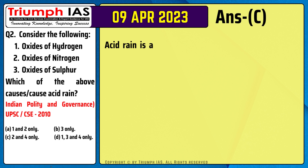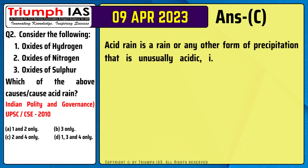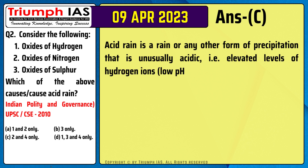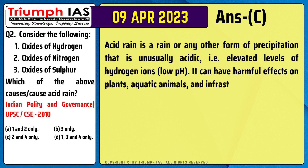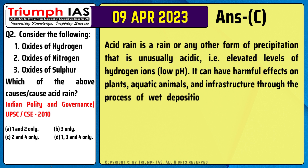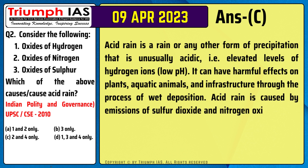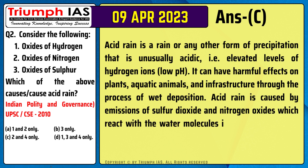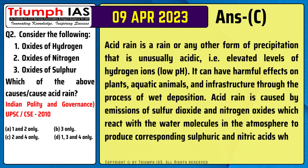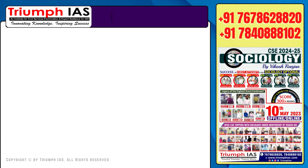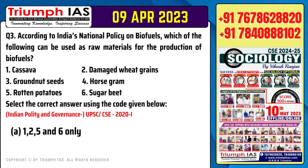The correct answer is option C. Acid rain is a rain or any other form of precipitation that is unusually acidic, i.e. elevated levels of hydrogen ions and low pH. It can have harmful effects on plants, aquatic animals, and infrastructure through the process of wet deposition. Acid rain is caused by emissions of sulfur dioxide and nitrogen oxides which react with the water molecules in the atmosphere to produce sulfuric and nitric acids, which fall along with rain droplets on the ground.